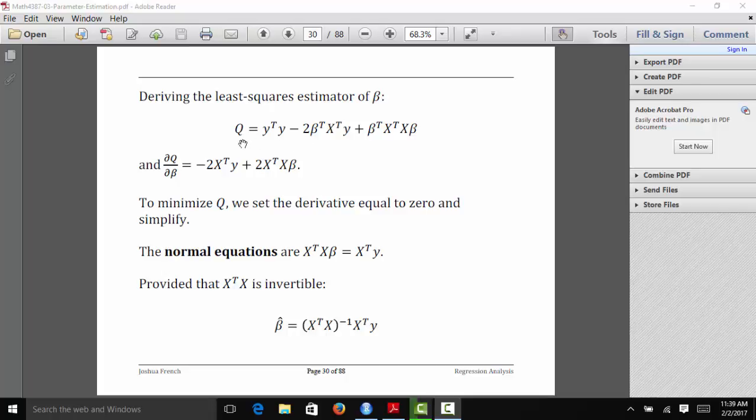If we expand Q, we get y transpose y minus two beta transpose x transpose y plus beta transpose x transpose x times beta. That's just expanding out that linear algebra equation. In order to find the beta that minimizes this objective function, we can once again do some calculus. Now we're doing calculus related to matrices instead of individual parameters.